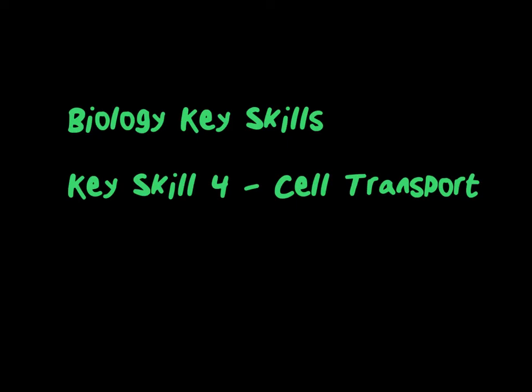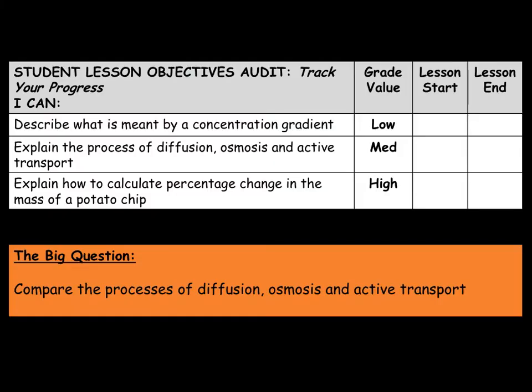This is the fourth video in the Biology Key Skills video tutorial series. In this video, we will be looking over cell transport. We will look at what is meant by a concentration gradient, and the processes of diffusion, osmosis, and active transport.